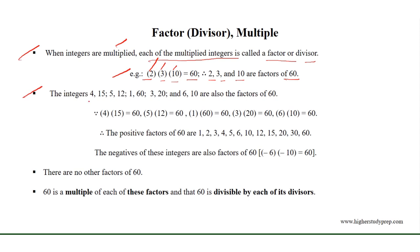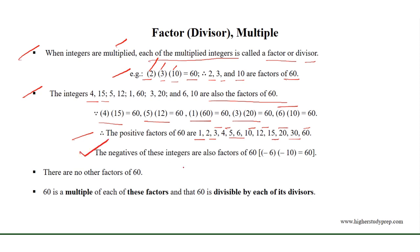Similarly, the integers 4, 15, 5, 12, 1, 60, 3, 20, 6, and 10 are also factors of 60. Therefore, the positive factors of 60 are 1, 2, 3, 4, 5, 6, 10, 12, 15, 20, 30, and 60 itself. The negative of these integers are also factors of 60.